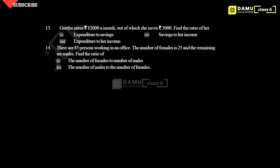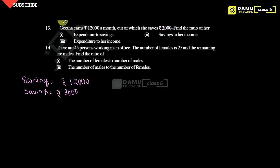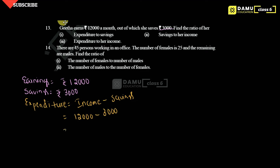So in this question we are going to discuss: Geitha earns 12,000 a month, out of which she saves 3,000 rupees. Find the ratio of her expenditure to savings. So first, earnings will be 12,000 rupees. Then what is the savings — savings will be 3,000 rupees. Then what is the expenditure? Expenditure will be income minus savings. So 12,000 minus 3,000 — then what you will get: 9,000 will come.